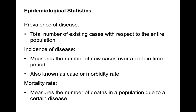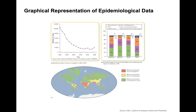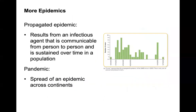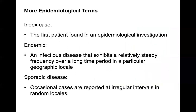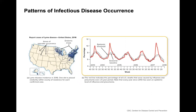Key epidemiological statistics include prevalence, incidence, and mortality rates. Types of disease spread include pandemics — the spread of an epidemic across all continents, as with coronavirus — endemic diseases that are part of a specific geographical region, and sporadic diseases that occur occasionally with no regular pattern. Looking at Lyme disease, you can see patterns and peaks in disease occurrence.